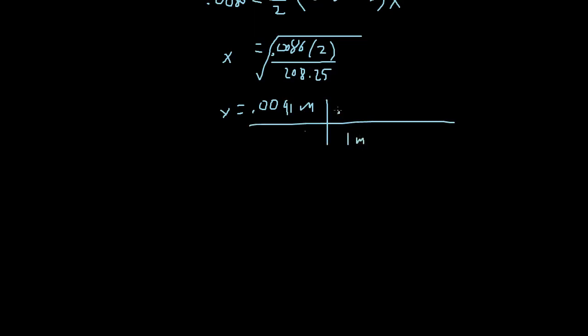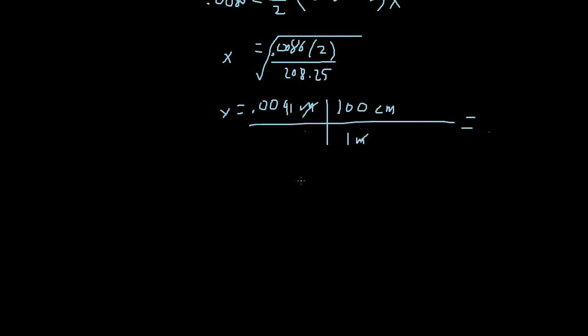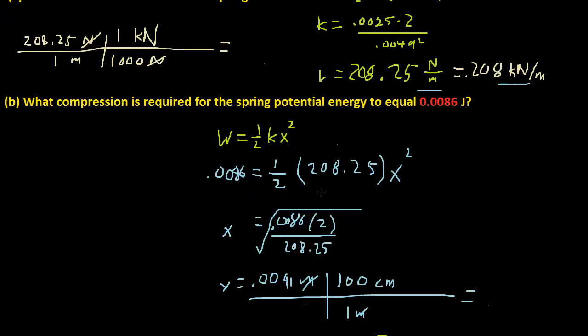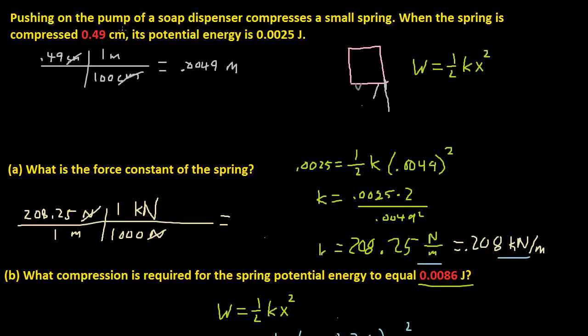So one meter is equal to 100 centimeters. So meters cancel out. And we get that times 100, which is 0.91. So that's equal to 0.91 centimeters. That's our answer. Or that's my answer, because you would have different numbers for this one and for this one.